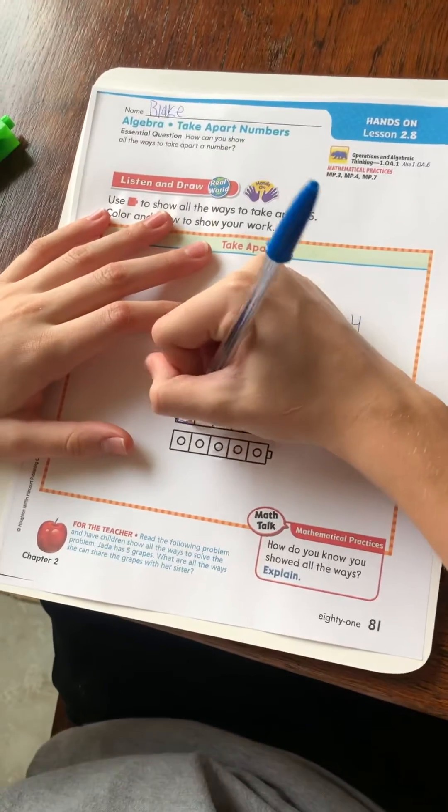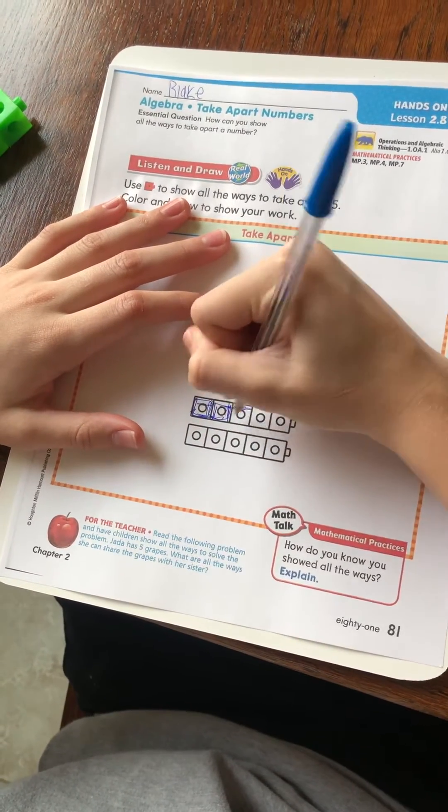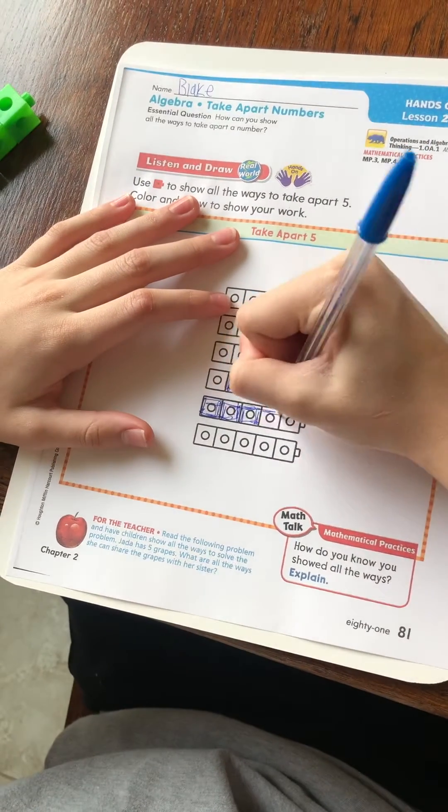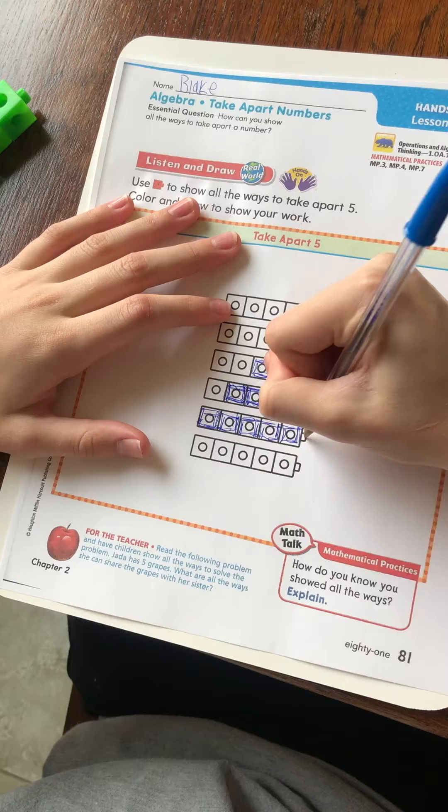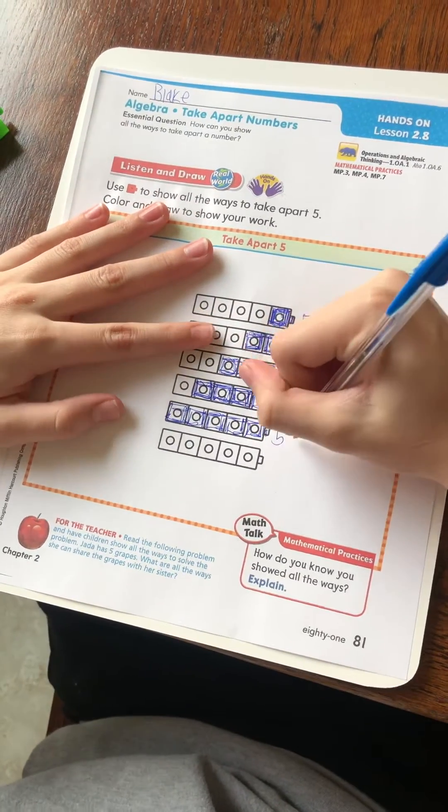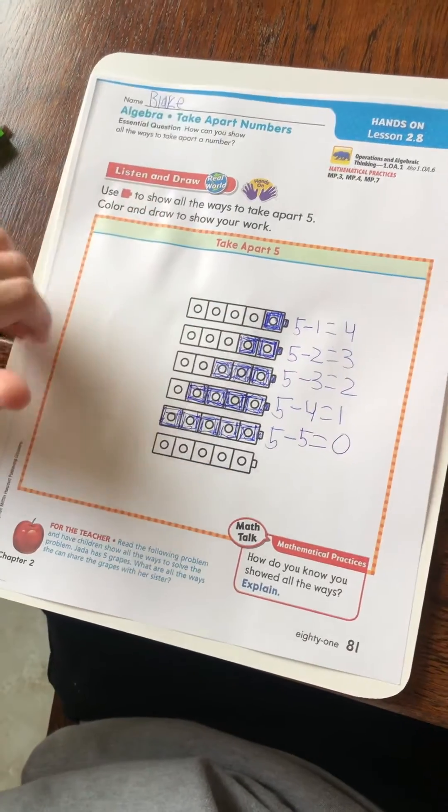Now, let's color in all the blocks this time. Okay. Okay. So, this would be five minus five equals zero. Okay.